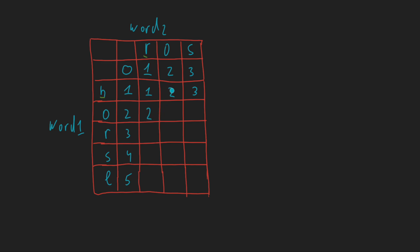Now we compare o with o — they are equal! This means we don't make any change. We take the value from the already-solved sub-problem. We have 'ro' and 'ho', and since o equals o, we look diagonally at the sub-problem for 'r' and 'h', which equals one. So we set one here — no increase needed.